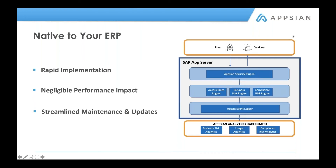Here, what we have is, if you see, there's a blue box in the middle — that's the SAP App Server. The honey-colored box at the top is where the users are coming in, and it could be any of the UIs: SAP GUI, NWBC, Fiori, or any of those different UIs. The honey-colored box at the bottom is our analytics dashboard; it can be on any SIEM tool, and for the demo we used Splunk.